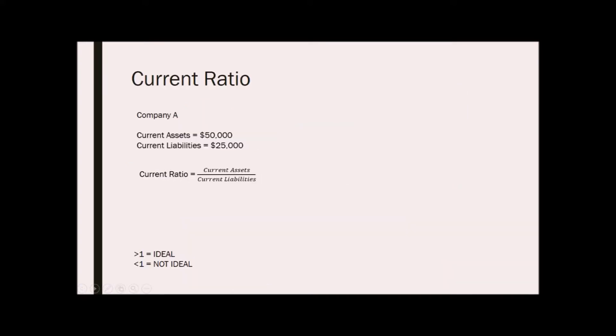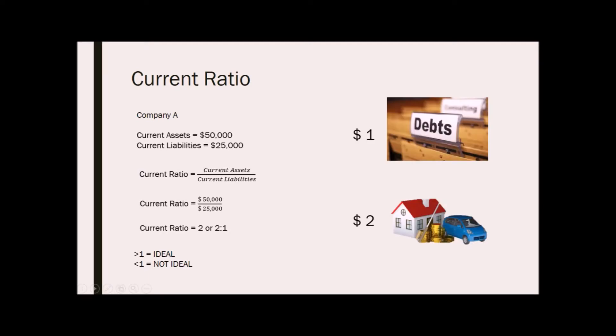For an example of a current ratio, let's say company A has a current asset of $50,000. It has a current liabilities of $25,000. To get the current ratio, we divide $50,000 over $25,000. The current ratio then is 2 or 2 is to 1. This means that for every $1 in current liabilities, the company has $2 in current assets.